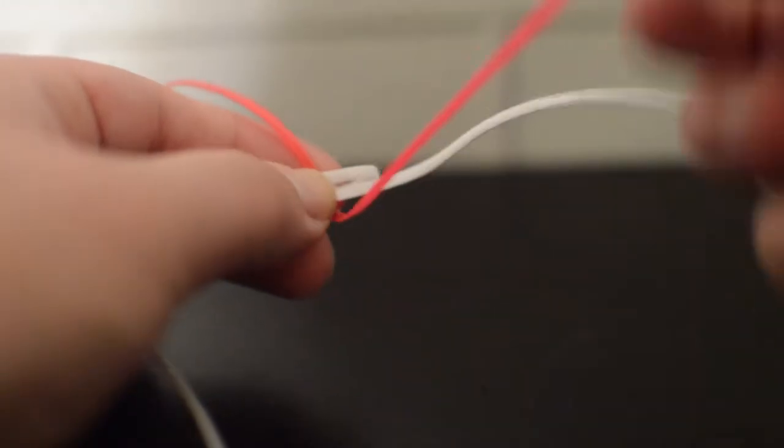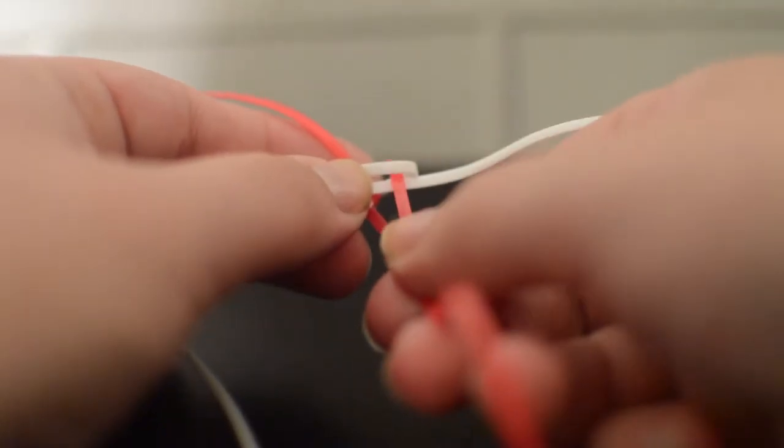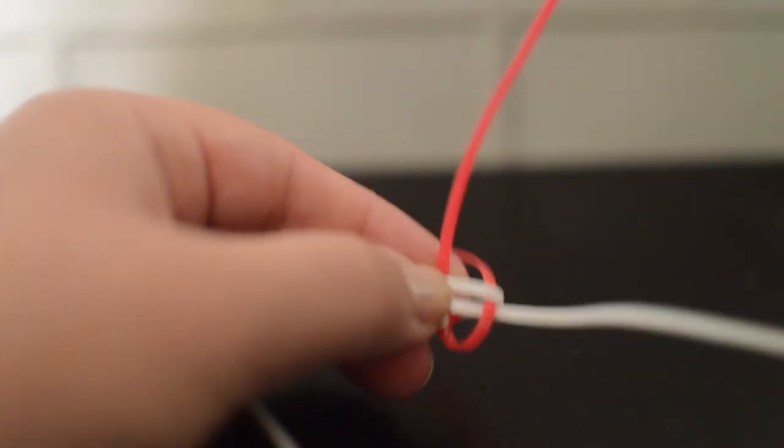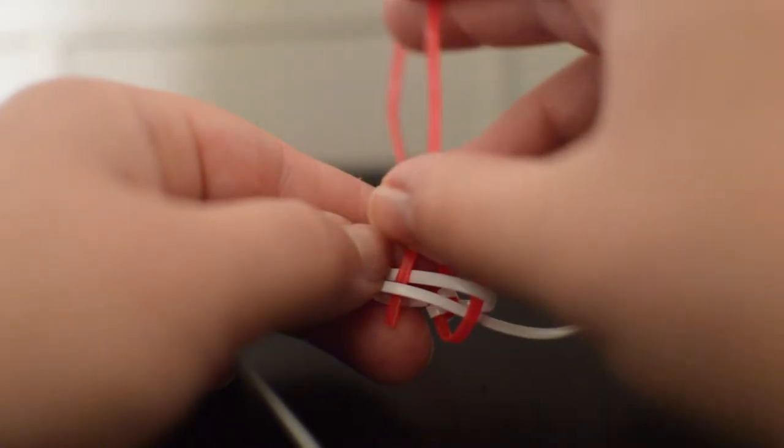Now this pink piece right here, you're going to want to go over this piece and into the loop that you made with your other piece right there. You're going to take your other string and go over the piece that you just went into and into the loop on the other side.